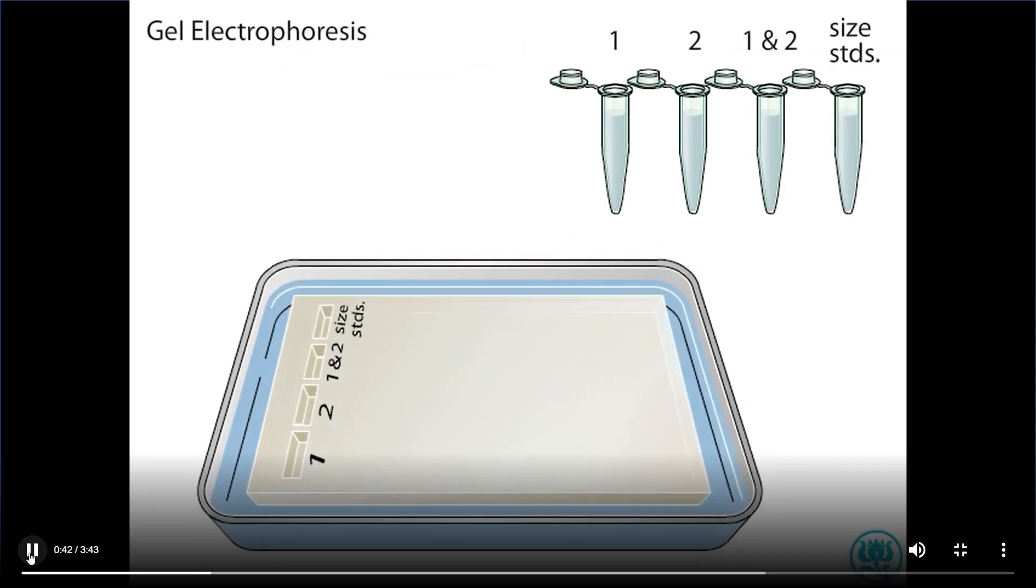Gel electrophoresis is one of the most useful means of separating and purifying DNA fragments for further analysis. In this technique, a jello-like slab of material called agarose is molded with wells, placed in a buffer solution and hooked up to positive and negative electrodes.